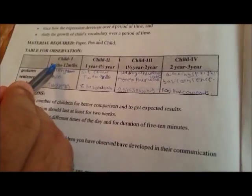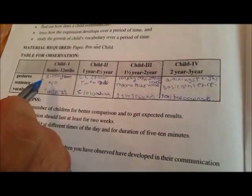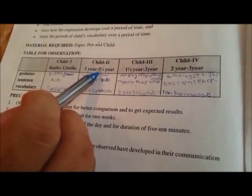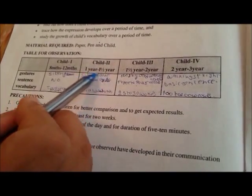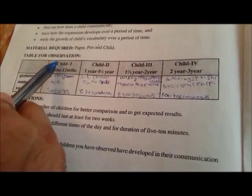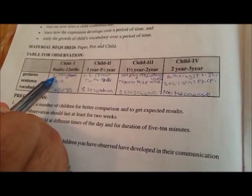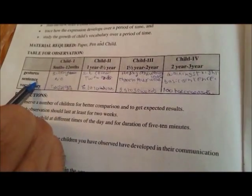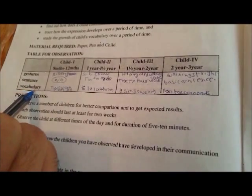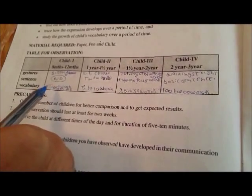Let's talk about the gesture of a child who is eight to twelve months. The gesture is either sit, smile, laugh, cry, and there is no giggling. In gestures, they're just sitting, laughing, smiling, crying. Their sentences, they are not able to make any sentence so we have written no. For vocabulary, they can make only two words such as mom, mama, dad like that.